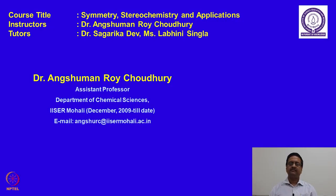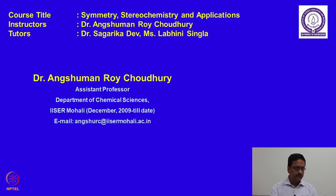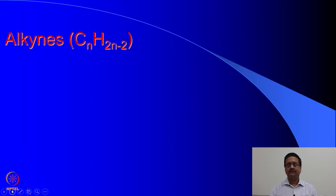Welcome back to the course on symmetry, stereochemistry and applications. We were trying to understand the different rules of IUPAC nomenclature for various organic compounds. In the previous two lectures we learnt about how to write the names of organic molecules for simple hydrocarbons, substituted hydrocarbons, and the naming of alkenes. In that direction we would continue to understand the names of alkynes.